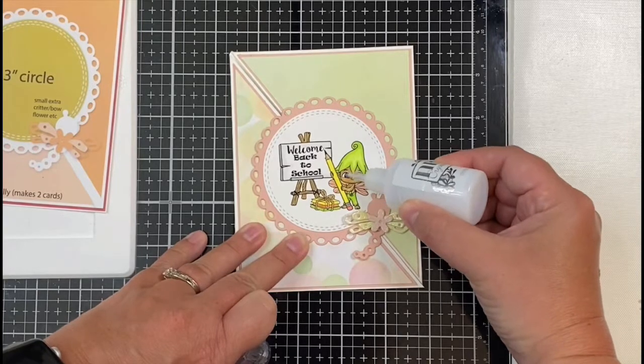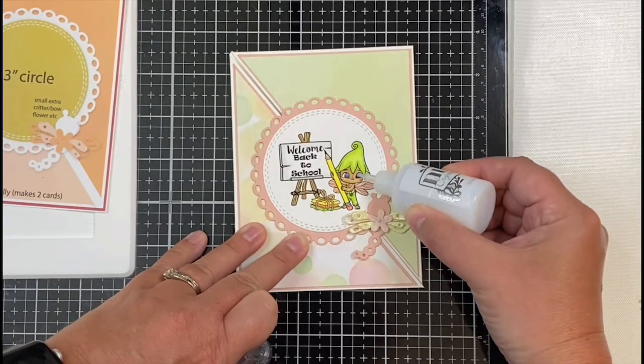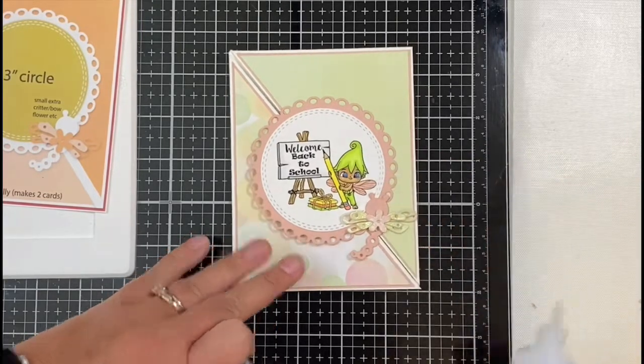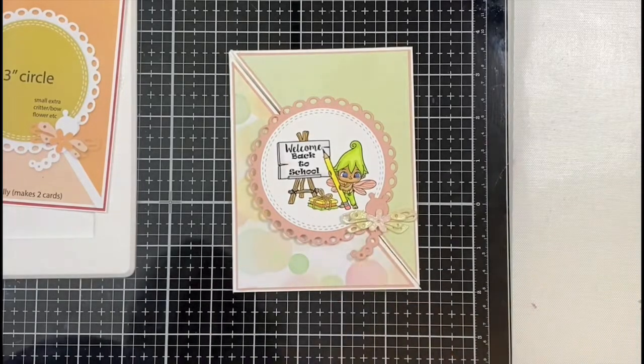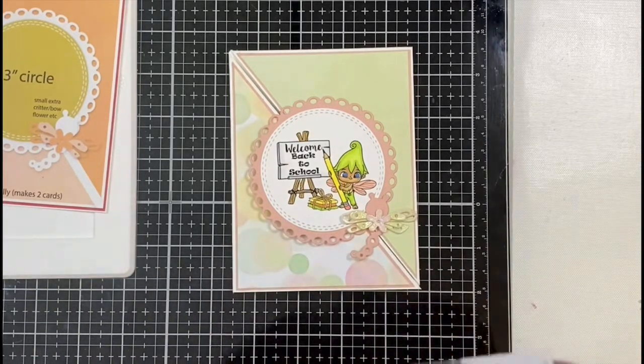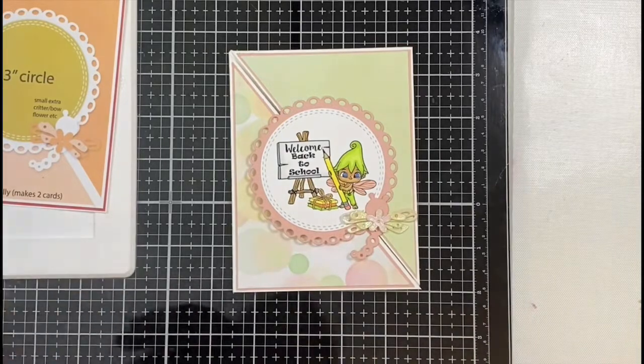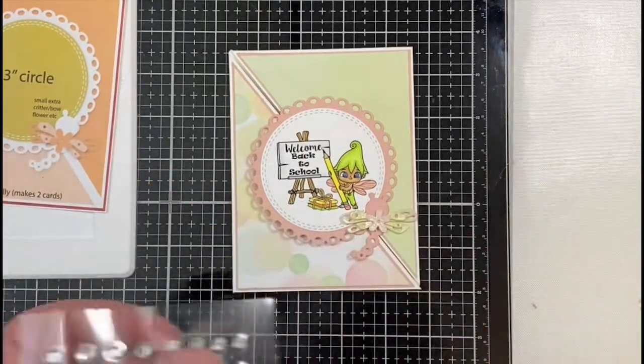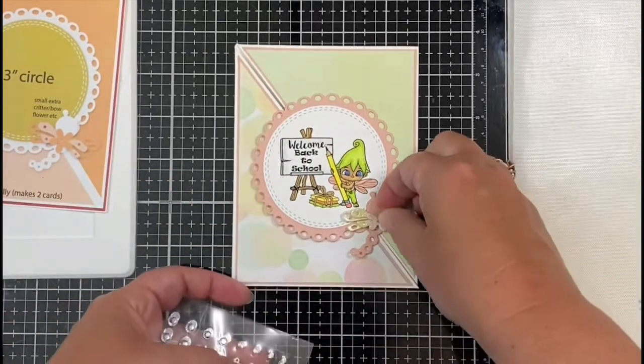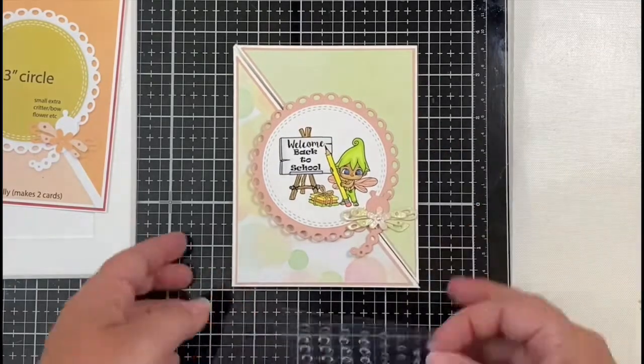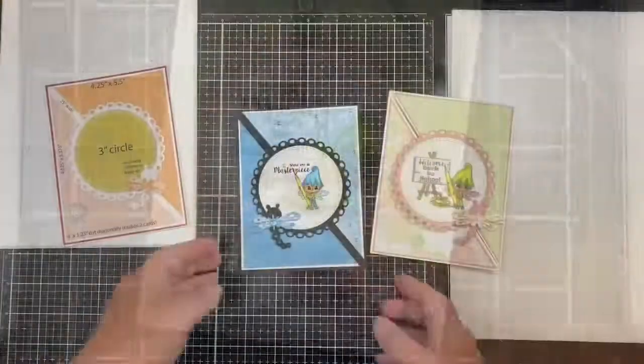I really love the fun fold on this card. I think it's super neat. You can add some pop-up elements to the inside or add another image or sentiment. There's just a lot that you can do with it. But adding this little iridescent rhinestone bling to the center of that flower, and this finishes off the card.